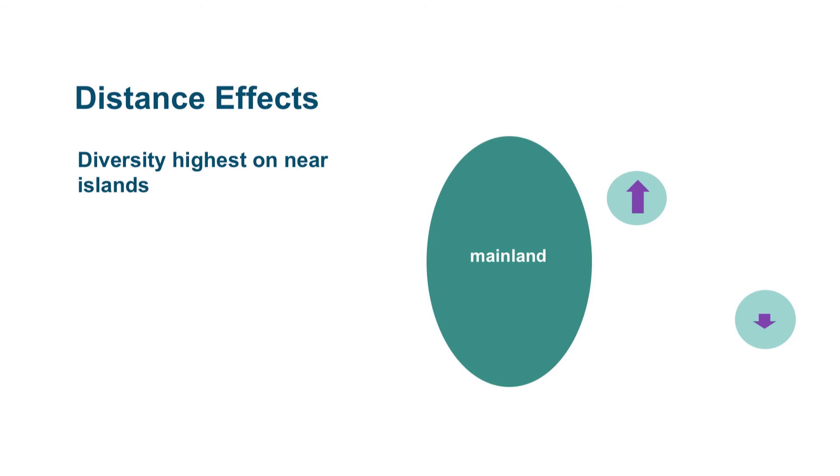Distance effects are also interesting. Diversity tends to be highest on islands that are near to a mainland. This mainland is a source of immigrants.